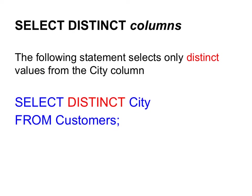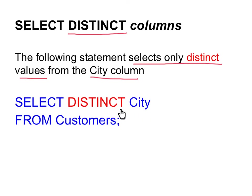In the third example, we add the word DISTINCT before the name of the column. When the following statement is executed, it will select only those distinct values from the city column. For example: SELECT DISTINCT City FROM Customers. That means if two records have the same city name, only one city will be displayed.